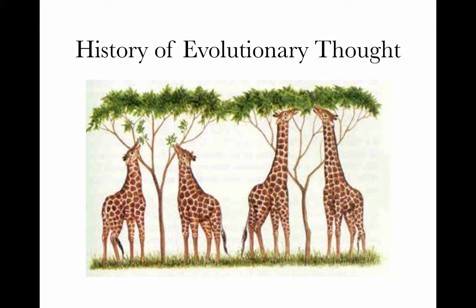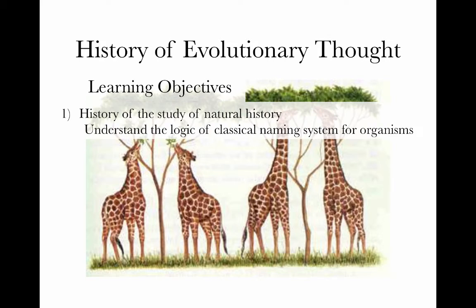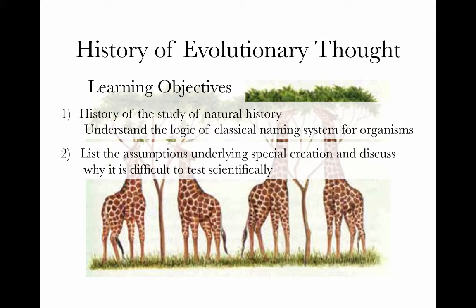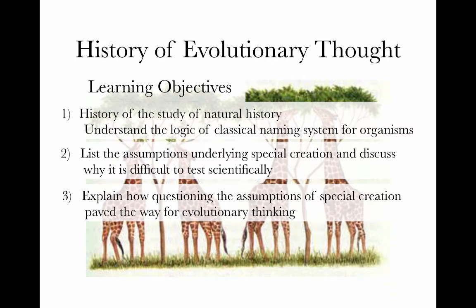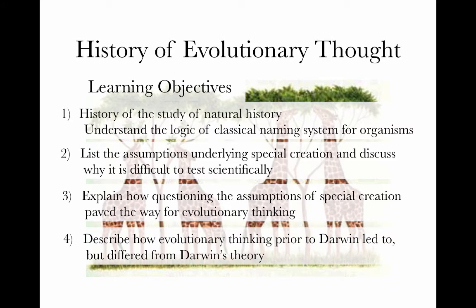Evolutionary thinking goes back at least a century or two before Darwin, and I have a couple of objectives in briefly reviewing this. I'd like you to understand the history of the study of natural history and some of the logic in the classical naming system, the Linnean system. I'd like you to understand the assumptions underlying special creation and be able to discuss why it's difficult to test them scientifically, and to explain how questioning the assumptions of special creation paved the way for evolutionary thinking and essentially all of modern biology. And to describe how evolutionary thinking prior to Darwin led to, but differed from, Darwin's theory.